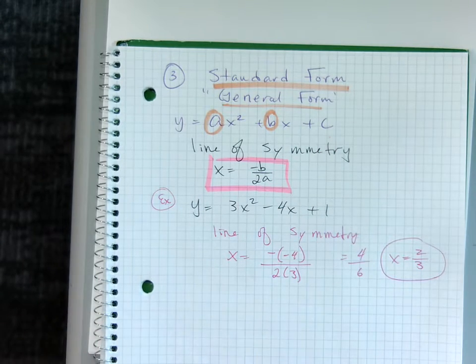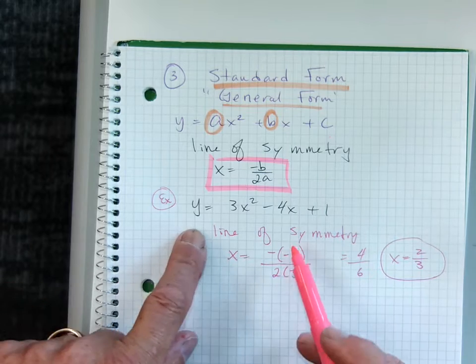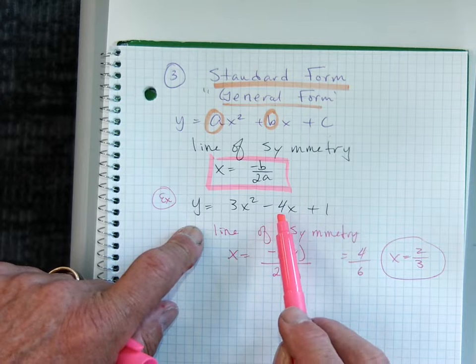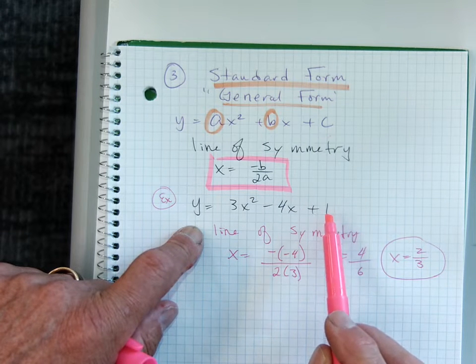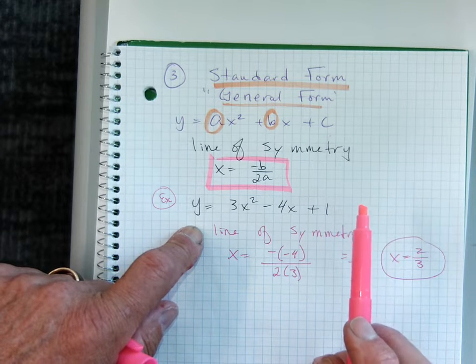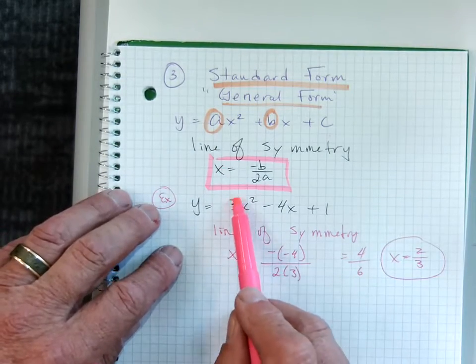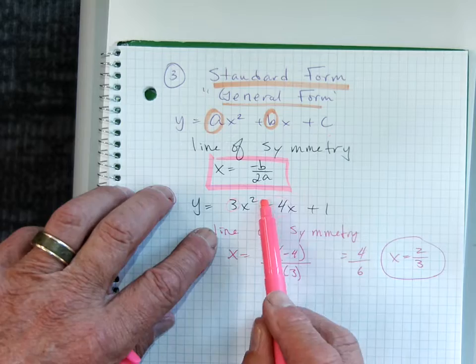So we looked at an example. So let's find the line of symmetry. It's in standard form, three x squared minus four x plus one. And the line of symmetry would be, well, I need my a, which is my three. I need my b, which is my negative four.